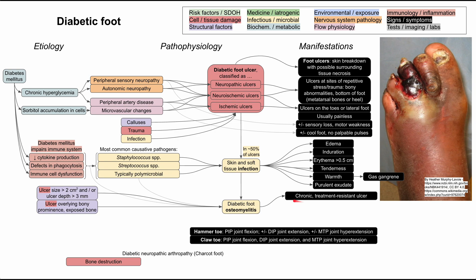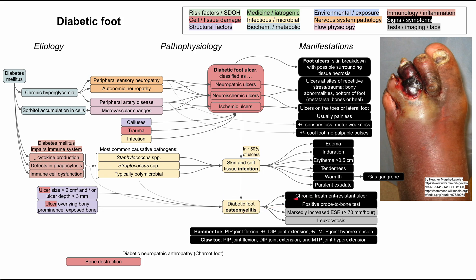Osteomyelitis has some unique manifestations. It can lead to an ulcer that is chronic, lasting for weeks and treatment-resistant. You can have a positive probe-to-bone test, where you touch the ulcer and immediately contact bone at the end of your probe. A very high ESR — erythrocyte sedimentation rate greater than 70 — may signify osteomyelitis, and it can also cause leukocytosis. Infection starts in the skin and soft tissues, spreads to bone, and often becomes a chronic condition.